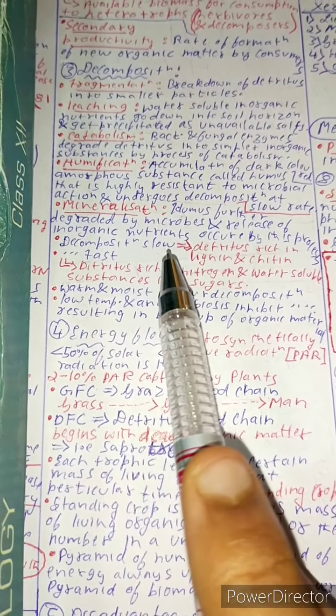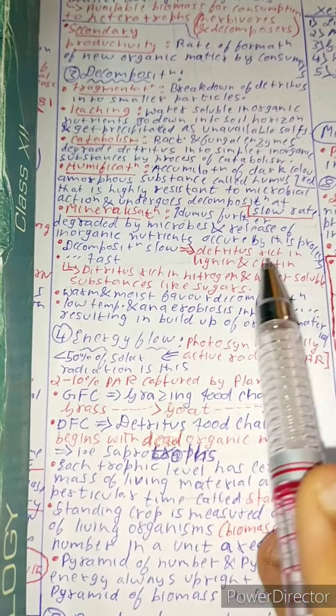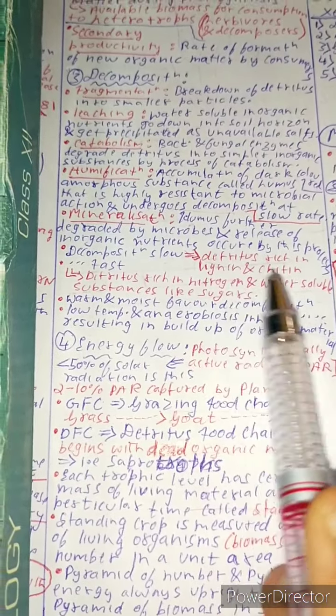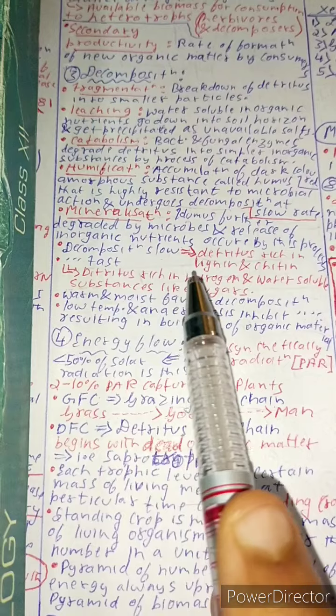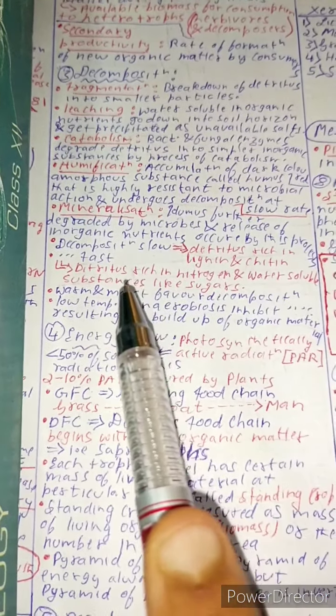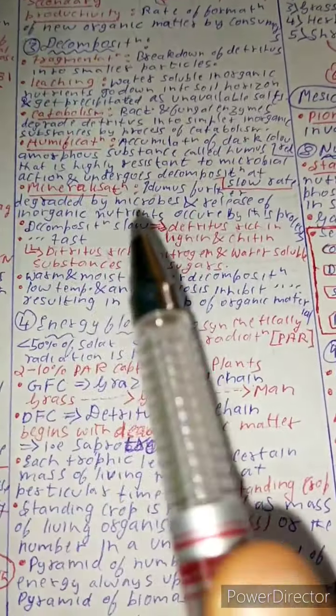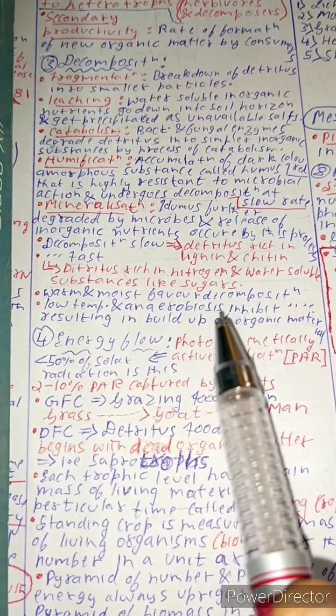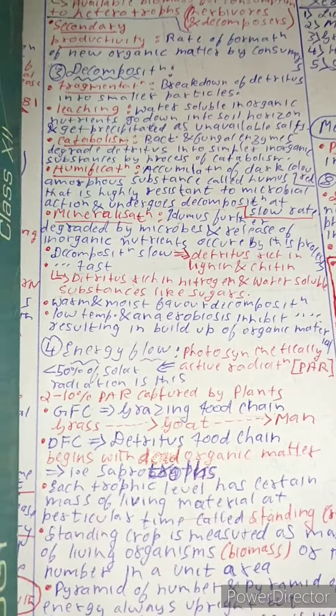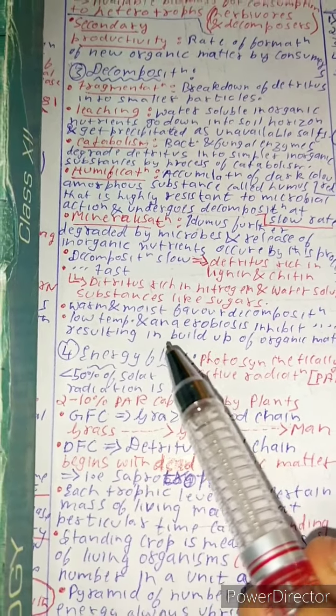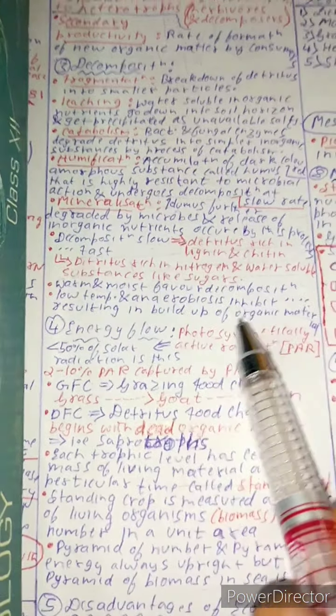Decomposition is slow if detritus is rich in lignin and chitin, and it's fast if detritus is rich in nitrogen and water soluble substances like sugar. Now warm and moist conditions favor decomposition, whereas low temperature and anaerobiosis inhibit decomposition, resulting in the build up of organic material.